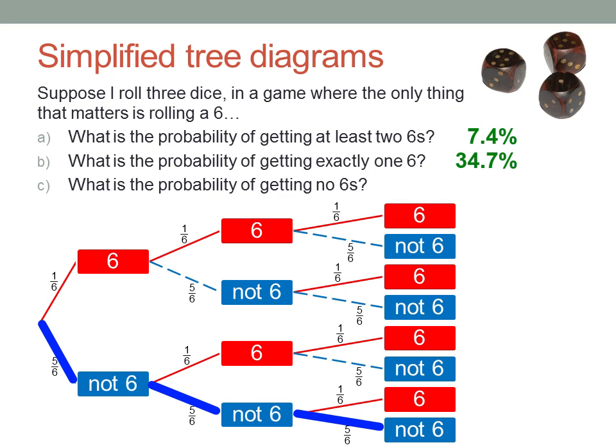And there's only one way in this tree to get no sixes. But it's a fairly common outcome, because there's actually many different rolls hiding along this one path. It's five times five times five, or one hundred and twenty-five out of two hundred and sixteen. That's around fifty-seven point nine percent.